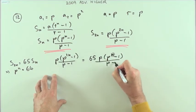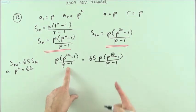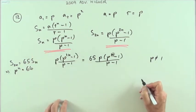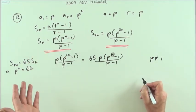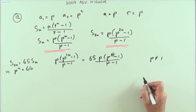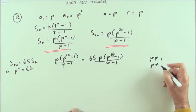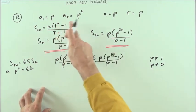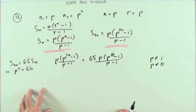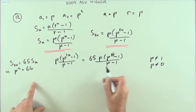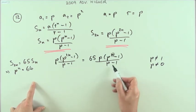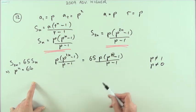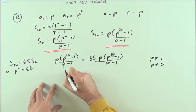Straight away I notice p cannot equal 1 in these expressions, otherwise I'd be dividing by zero and the sums wouldn't exist. Neither can p equal 0 because the terms would just be zero. Given that, I can safely multiply by them, so the p's cancel and the (p - 1) terms cancel.